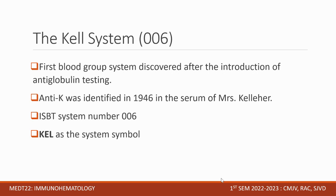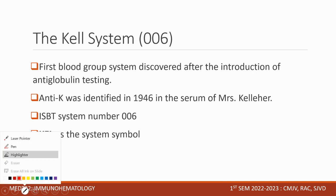Let's proceed to one of the significant blood group systems — we have the Kell system, ISBT number 006. This is the first blood group system discovered after the introduction of anti-globulin testing. Anti-K was identified in 1946 in the serum of Mrs. Keller, and from her name came the blood group name Kell, with system symbol KEL.